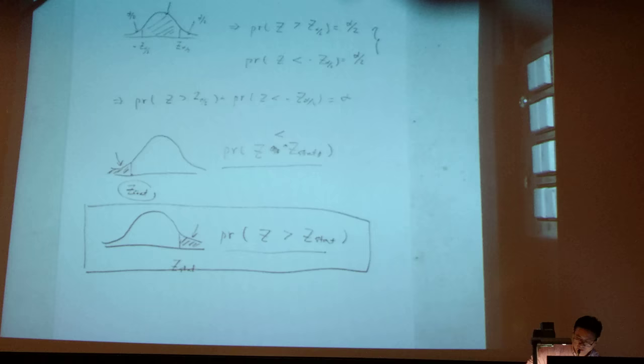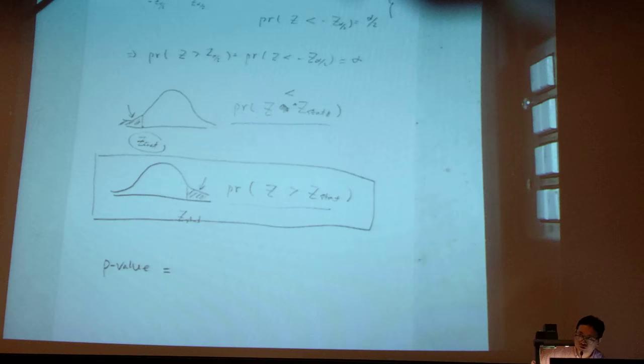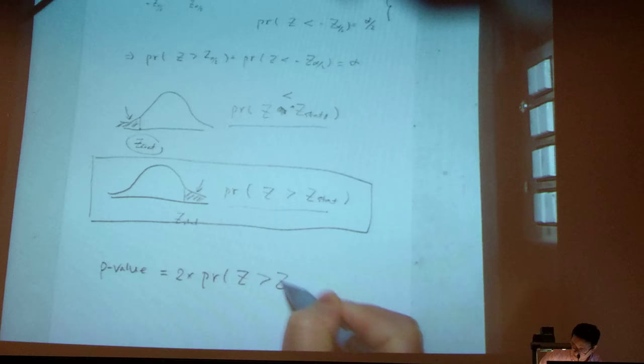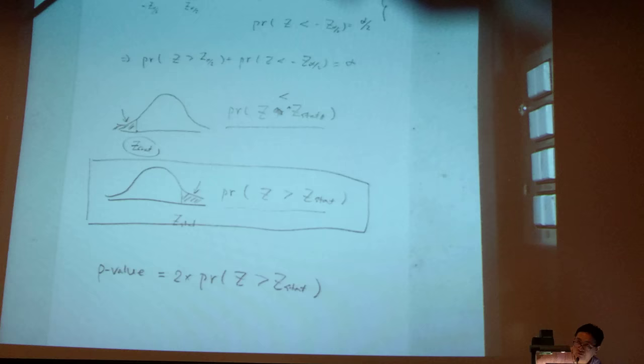What is the definition of the p-value? It's very simple if you understand this. The p-value is exactly equal to two times the probability that z is bigger than the z statistic. So this is the definition. This is the p-value. And the reason why we have the two is because I have the symbol.